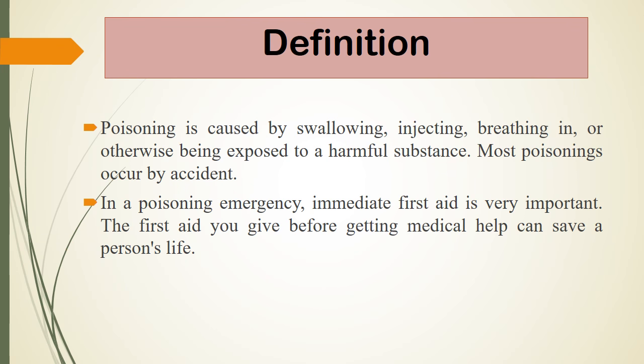Definition of poisoning: poisoning is caused by swallowing, injecting, breathing in, or otherwise being exposed to any harmful substance. If harmful substances are exposed, that is known as poisoning. It can be intentional, non-intentional, or accidental, and it needs emergency immediate first aid for the person.